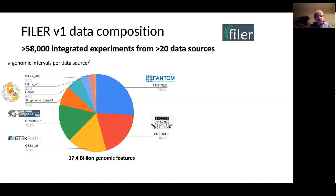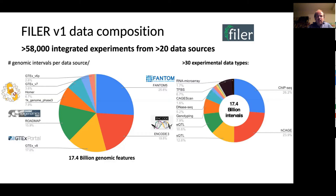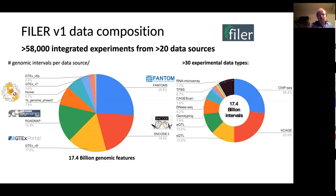This pie chart shows the data composition of the first version of Filer. As you can see, Filer includes data from ENCODE latest phase 3, data from GTEX, the NIH Roadmap Epigenomic project, the FANTOM project, and so forth. This data covers over 30 different experimental data types, including ChIP-seq, DNase-seq, ATAC-seq, as well as expression and splicing QTL data.